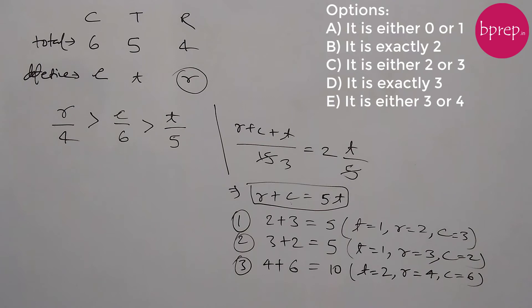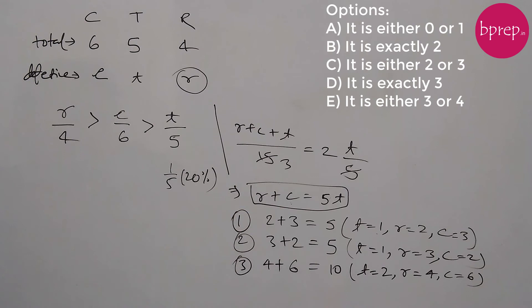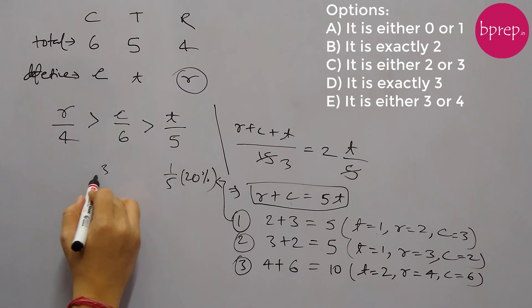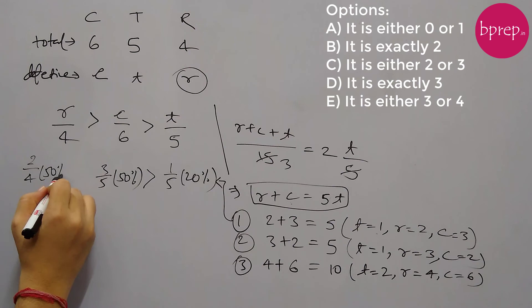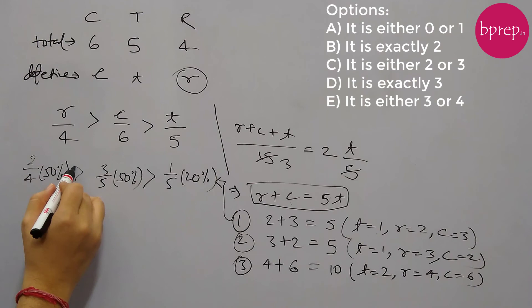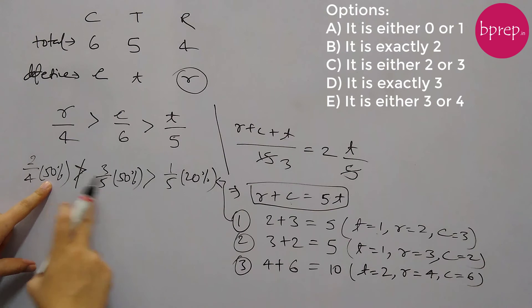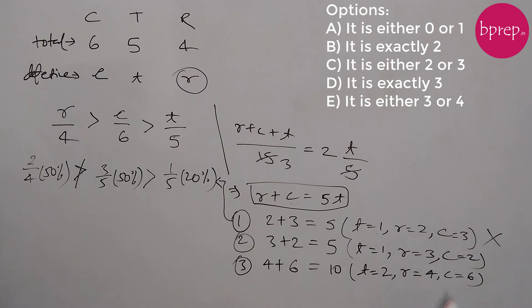Let's validate the first set: t equals 1, r equals 2, c equals 3. If t is 1, then t by 5 is 20%. C is 3, so 3 by 6 is 50% — this is greater than 20%, so that condition holds. But r equals 2, so 2 by 4 is again 50%. This condition requires r by 4 to be greater than c by 6, but 50% is not greater than 50%. So the first combination is not possible.